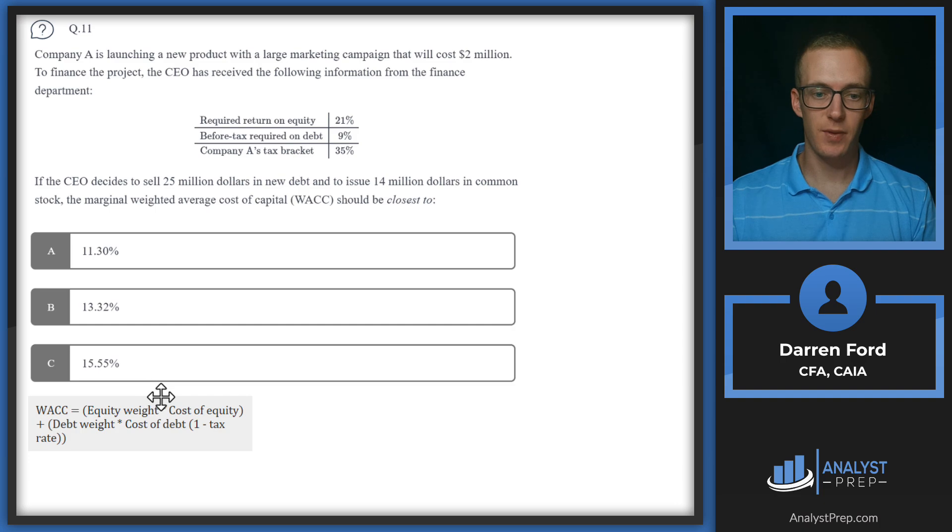Our weighted average cost of capital or WACC is going to be equity weight times cost of equity. We're given our cost of equity of 21%, and then we'll figure out our equity weight by looking at the amount we're issuing in common stock and debt. The debt weight will be one minus the equity weight, and cost of debt is going to be that before tax required multiplied by the tax rate to get the after tax cost.